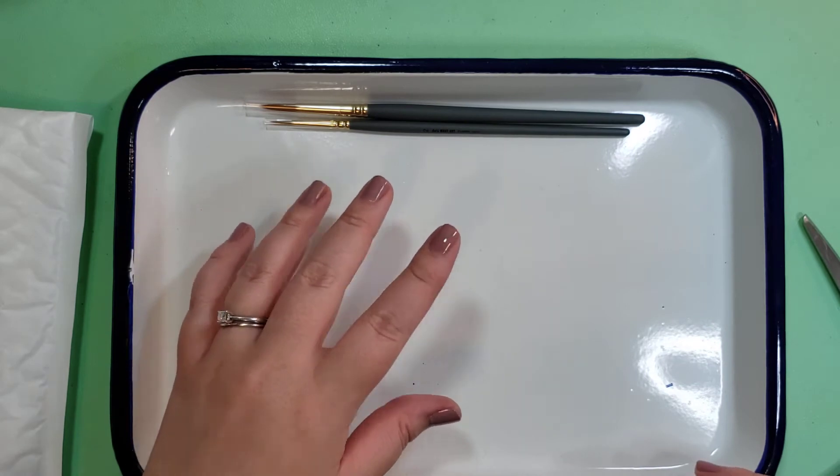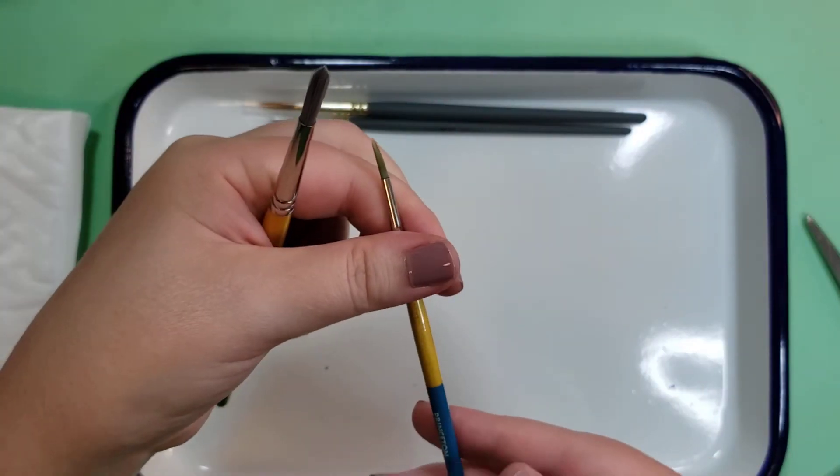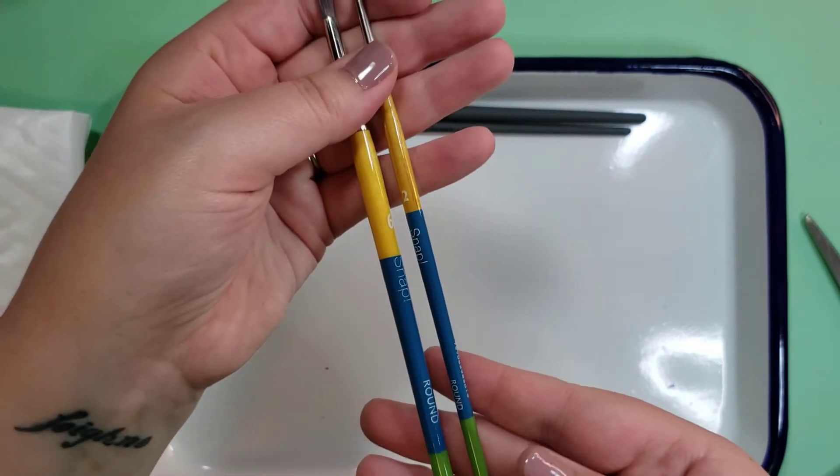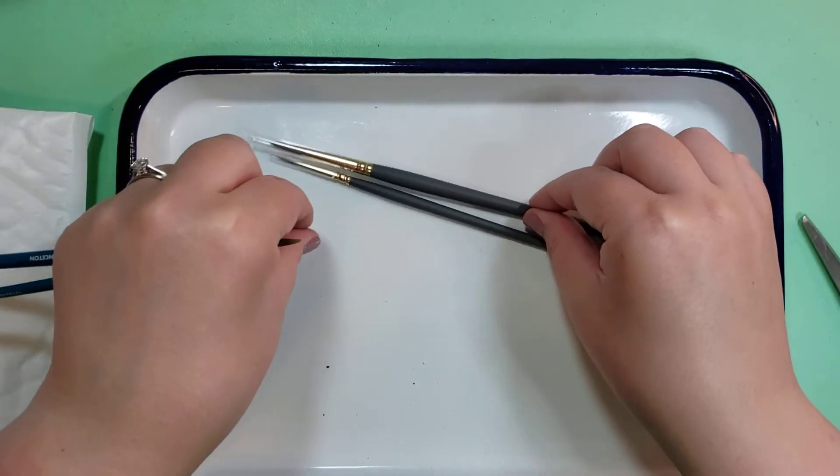So those will be very fun to use for their tutorials or any painting. I like the gray. I have a lot of different sets. I will admit I really like the Princeton Snap Map and I have a six and a two. But obviously the handles are very different. So now I've got a little gray set, I've got this set here.